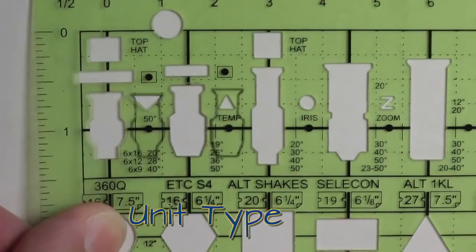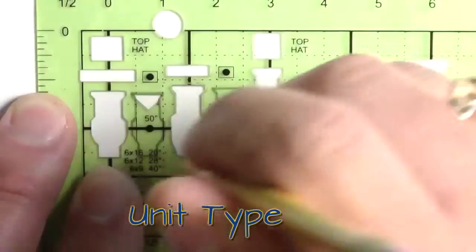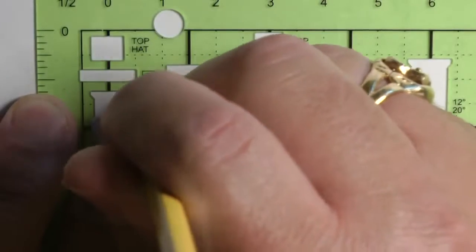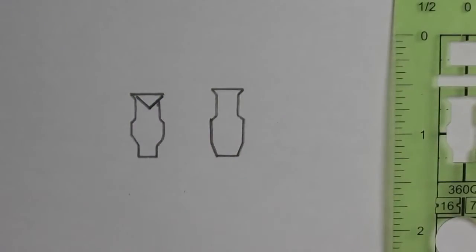So I just move this over, line it up, and draw that shape. And there we go. I've made my 50 degree unit.